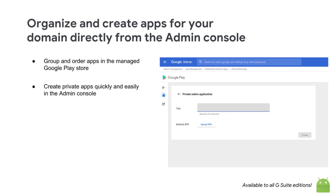We're now making it possible to publish a private Android app directly from the admin console, and no longer require the time-consuming steps in the Google Play console. The app will then appear in the managed Play store within minutes, as opposed to the hours that were previously required. This feature is only available to customers with advanced mobile device management enabled. Visit the help center for more on how to organize Android apps and manage Google Play private apps.